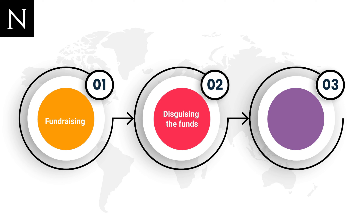Three: use for proliferation — using the funds for procuring materials and technologies for weapons of mass destruction.